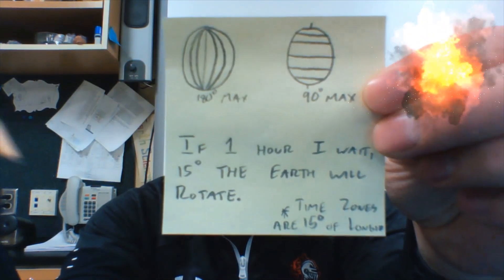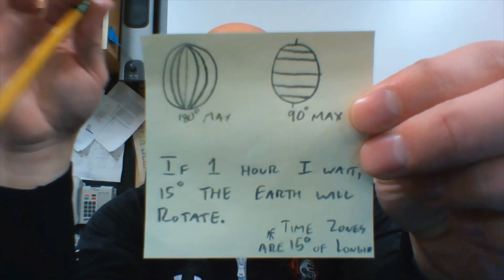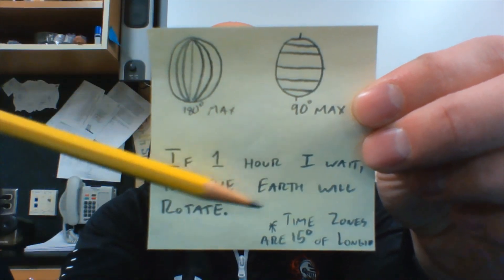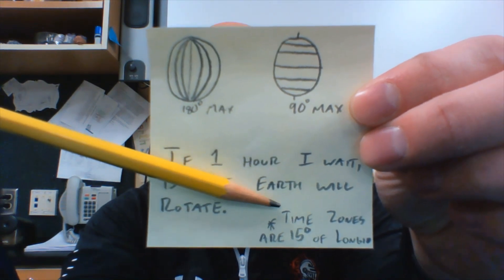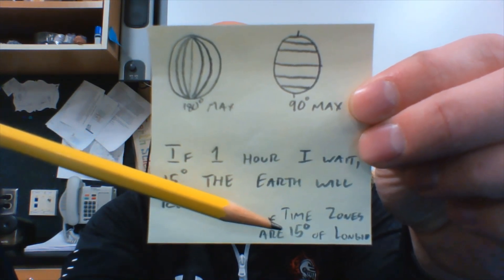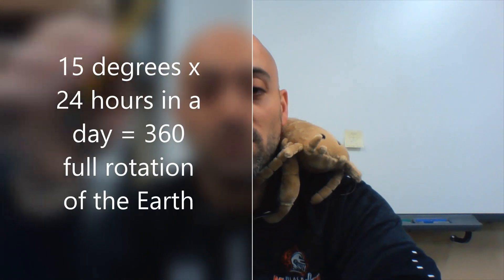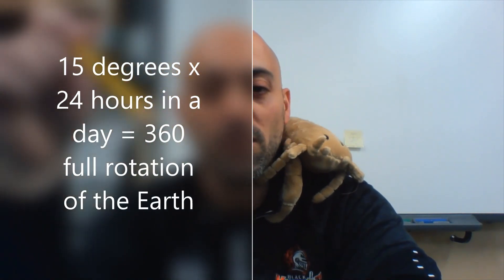Remember: every hour, 15 degrees — that's the speed the Earth rotates. Rotation is 15 degrees per hour, and that's what the time zones are based off of. Time zones are 15 degrees of longitude each hour, so 15 times 24 equals 360 degrees — that's the Earth spinning all the way around.